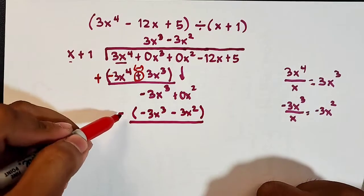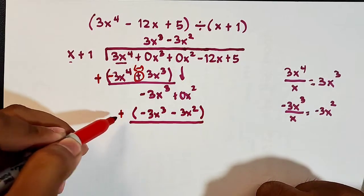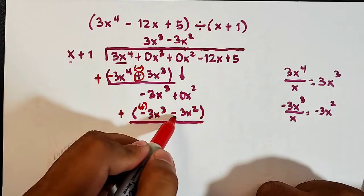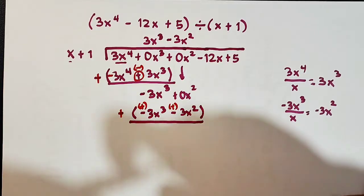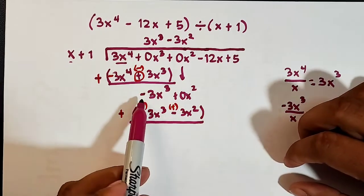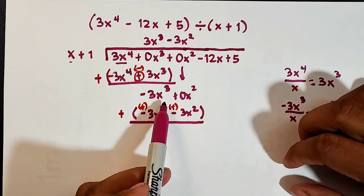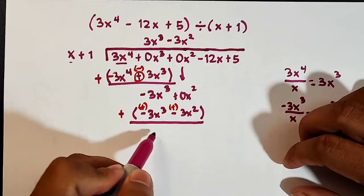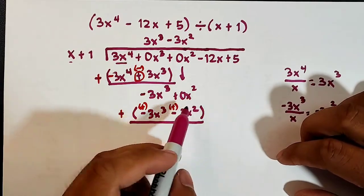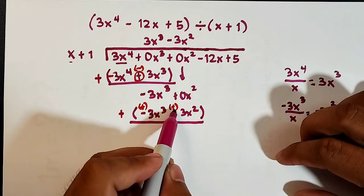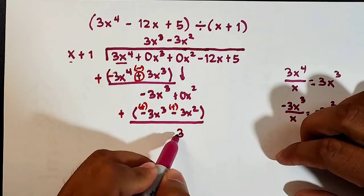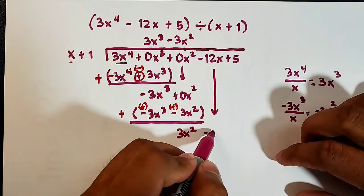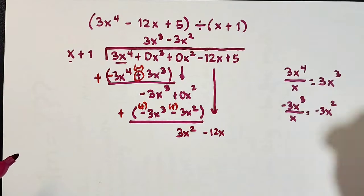We change the signs — subtraction becomes addition. Negative 3x cubed plus positive 3x cubed is zero. Then 0x squared plus positive 3x squared is 3x squared. Bring down minus 12x. We are not yet done.